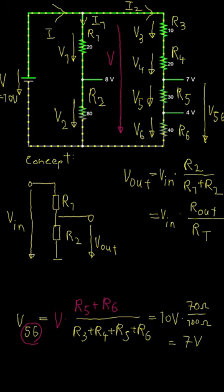In this case, the output voltage is equal to input voltage times R5 plus R6 over the total resistance.